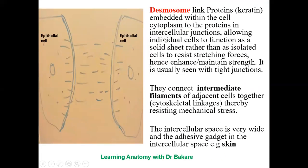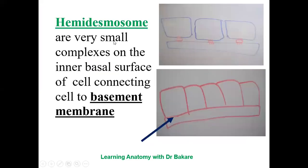The third form of junction is the desmosome. Within the cytoplasm, intermediate filaments are structurally connected to the intermediate filaments of the neighboring cell through this linkage. This does not allow movement between cells, but creates an adhesive support for the epithelium. We also have the hemidesmosome, which is not related to cell-to-cell junction but is found on the basal surface, linking the basal surface of the epithelium with the basement membrane through a small complex that supports their connection.